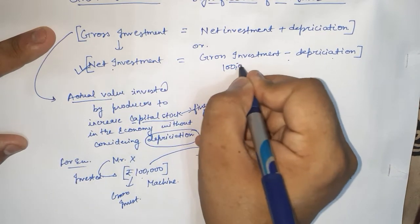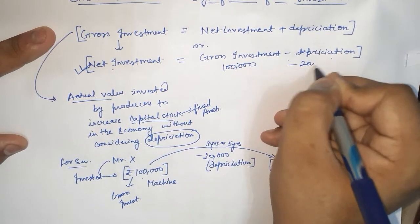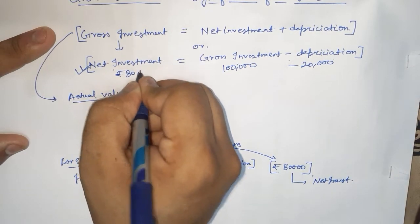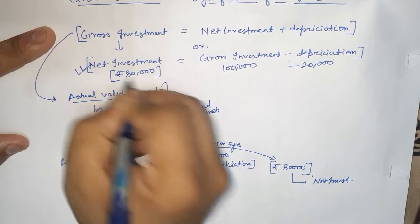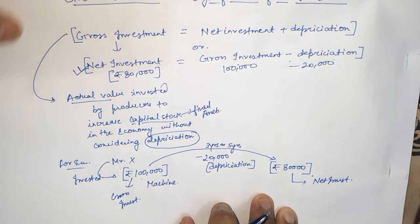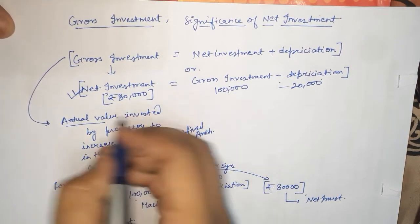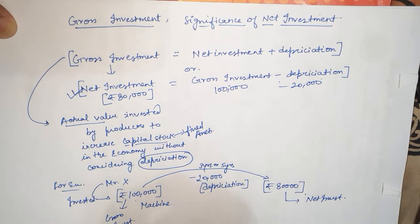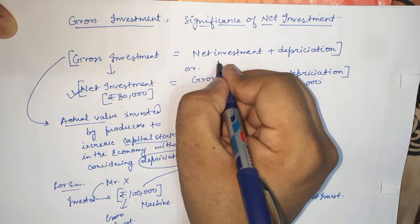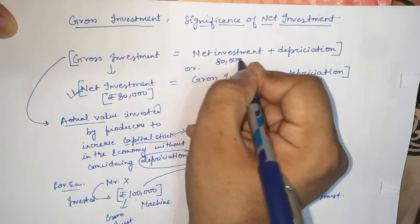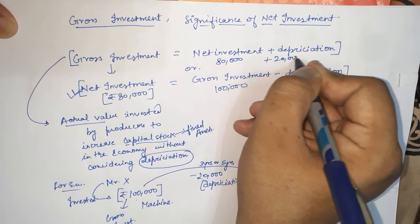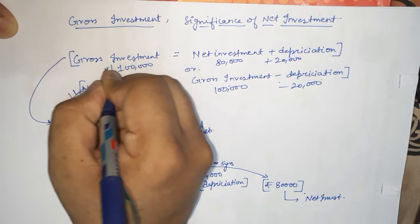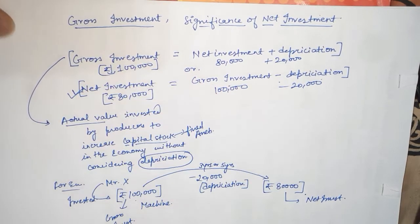The gross investment value was 1 lakh rupees, the depreciation value was 20,000 rupees, and finally you get a value of rupees 80,000 as net investment over the machine. Similarly, if you need to calculate the total gross value of investment, net value 80,000 plus 20,000 gives you 1 lakh rupees — that is your gross investment.